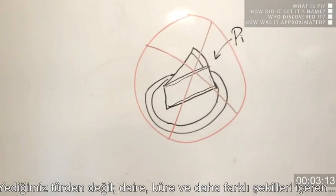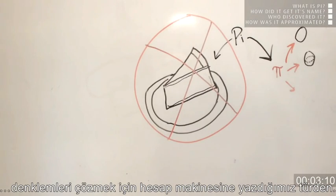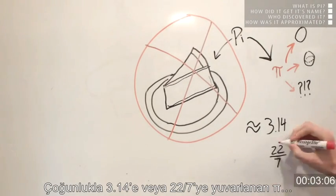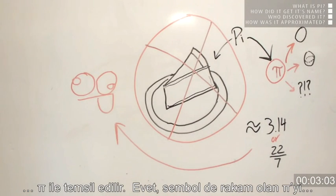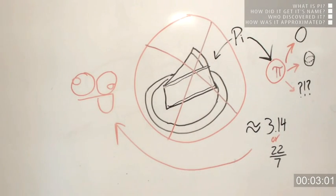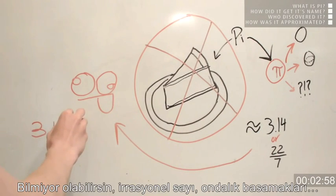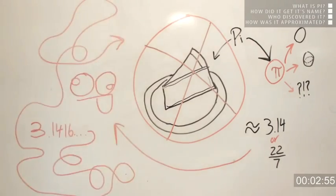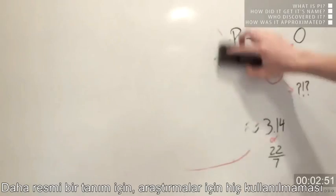Pi — not the kind you eat, but the kind you plug into your calculator to solve equations involving circles, spheres, and various other shapes. Most commonly approximated as 3.14 or 22 over 7, pi is an irrational number that is usually represented by the Greek symbol pi. The symbol as well as the number is referred to as pi. An irrational number, in case you didn't know, is a number with decimal places that spiral on infinitely with no discernible pattern. For a more formal definition of pi, let us look to the most forbidden of research sources: Wikipedia.